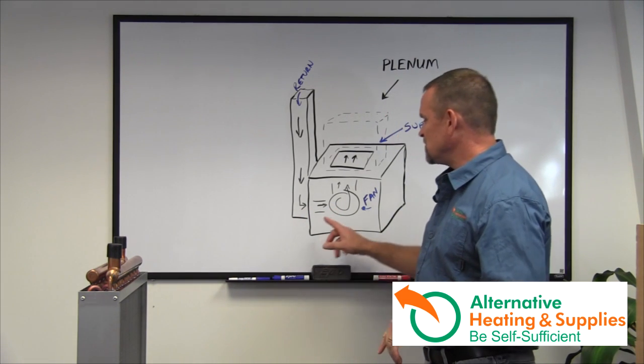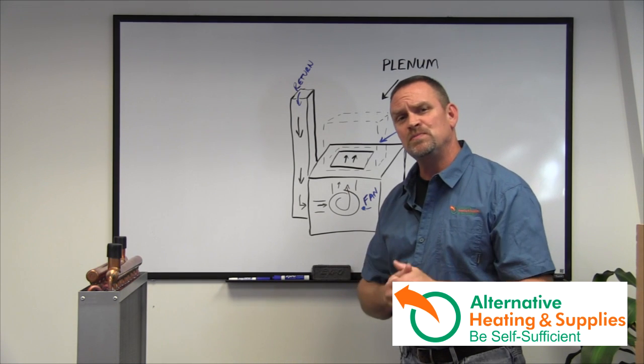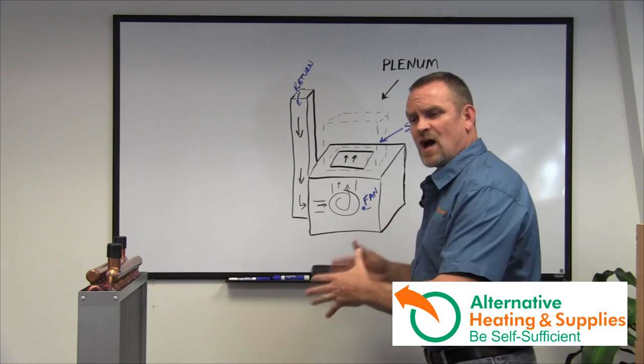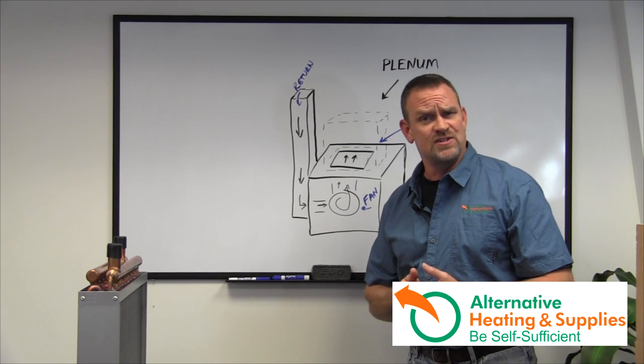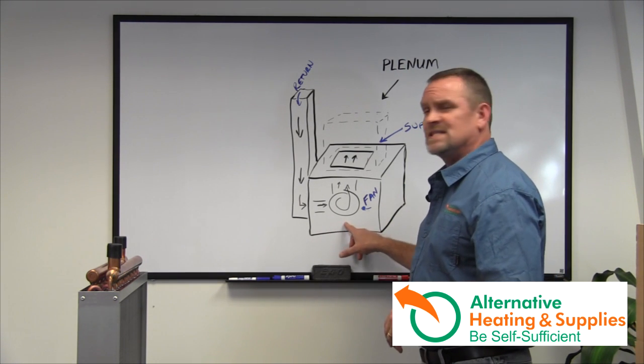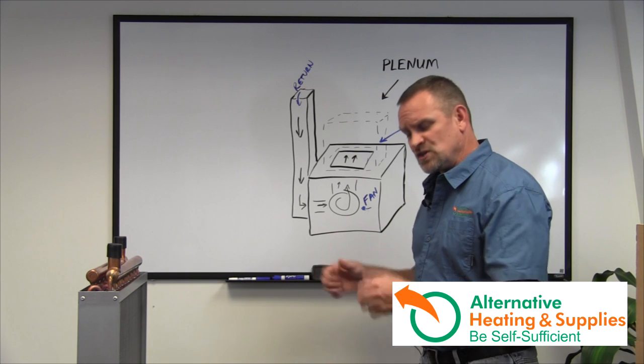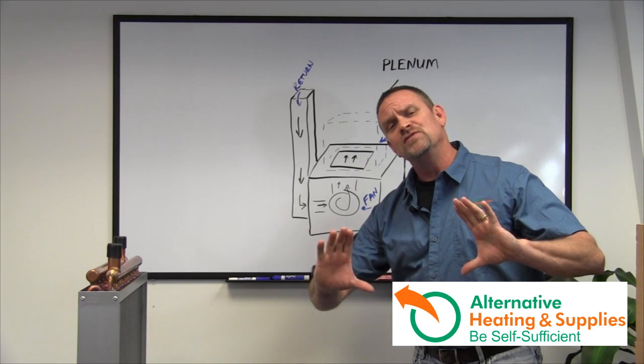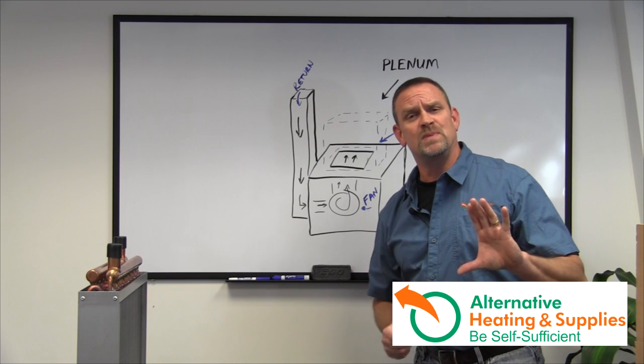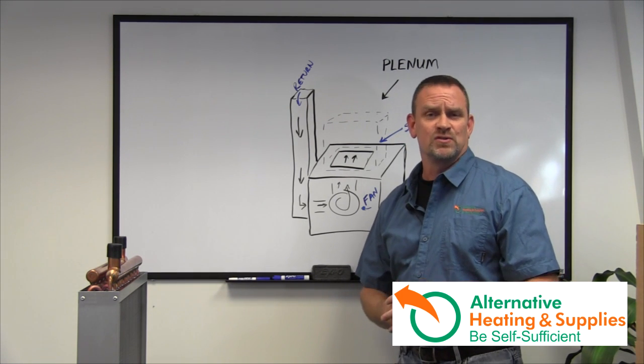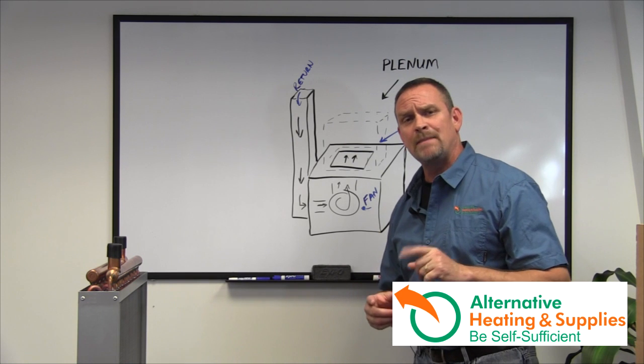But if you do, most of the fans are two and three speed. And the guy or the gal who set that up in your house originally probably doesn't have it on its highest setting. So simply looking inside your hot air furnace and pulling off the lid, you'll actually find this dip switches or changing wires will increase the speed of the fan. I would recommend you talk to an electrician or heating and cooling guy to help you with that.